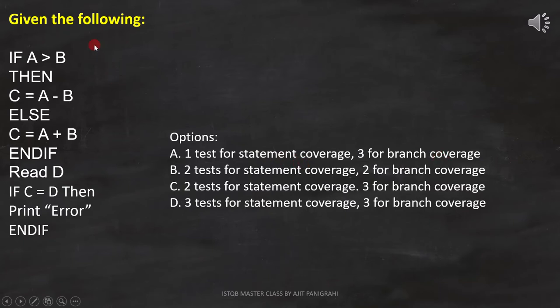To do that, let's first analyze the code and draw the flowchart. The first line is, if A is greater than B. Since this is a condition, we have to represent it like this.